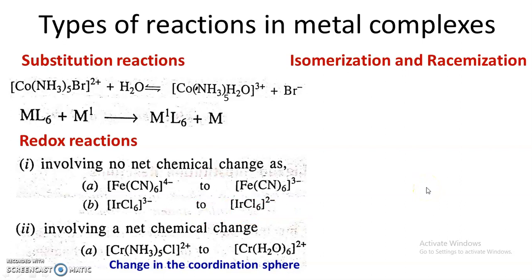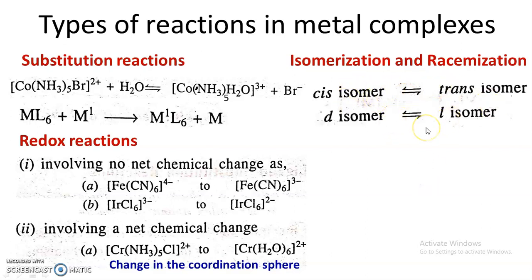The third type is isomerization and racemization reactions. Reactions which involve structural changes are called isomerization and racemization reactions. In these reactions there is an interconversion of geometrical isomers — for example, a cis isomer is converted into a trans isomer. Such a reaction is called isomerization. Or there is an interconversion of optical isomers — for example, a D isomer is converted into an L isomer. Such interconversion of optical isomers is called racemization.